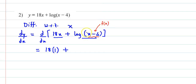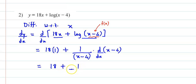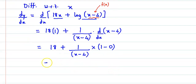Derivative of log of f(x) ہوتا ہے 1 upon f(x) into derivative of f(x). تو اس کا derivative آئے گا 1 upon (x minus 4) into derivative of (x minus 4) — یہاں ہم نے chain rule use کیا. یہ آئے گا 18 plus 1 upon (x minus 4) into — یہ دو terms کا derivative — x کا 1, اور 4 constant ہے تو اس کا derivative 0.